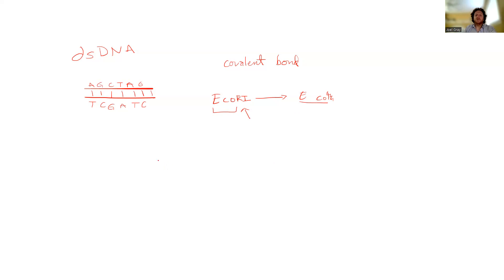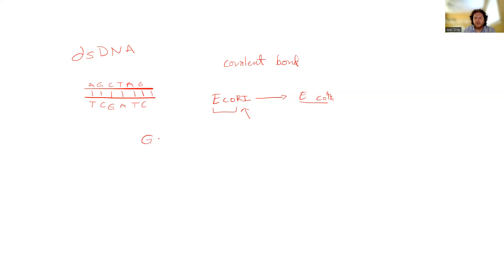A restriction endonuclease, in addition to potentially requiring ATP or not, is going to fall into a couple of different categories based on the restriction patterns. So if we took a restriction endonuclease like EcoRI, it's going to have a specific sequence that it's looking for. For example, some restriction endonucleases, if they see a pattern like G-A-T-C, what that means is they're looking for a piece of double-stranded DNA that basically looks like that.